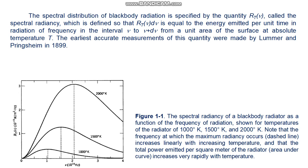They used an instrument essentially similar to the prism spectrometer used in imaging optical spectra, except that special materials were required for the lenses and prisms so that they would be transparent to the relatively low frequency thermal radiation. The experimentally observed dependence of R sub T of nu on nu and T is shown in Figure 1.1.